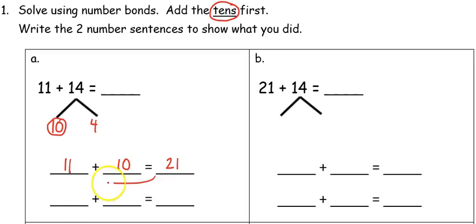I'll take that 21 and I'll add my ones. 21 plus 4 is 25. That means 11 plus 14 equals 25.